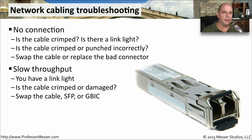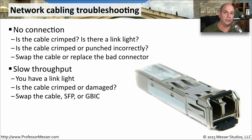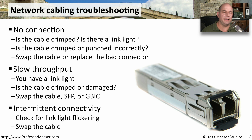If we're getting very slow throughput, we've got a link light and we might even see some activity lights flashing, but we're still not getting very good throughput. We may want to check if the cable is damaged — there might be a crimp or a bend in the cable itself. If you're using fiber connectors, SFPs, or GBICs, you may want to pull out those connectors and replace them with a brand new set. If connectivity is intermittently connected and not connected, it's probably best to swap the cable completely, as it's a very quick fix.